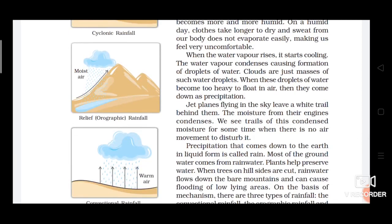Jet planes flying in the sky leave a white trail behind them — the moisture from their engines condenses. You must have noticed that when jet planes fly in the air, they leave white lines behind them. Those white color lines appear because of the moisture inside the engines that condenses. We see trails of this condensed moisture for some time when there is no air movement to disturb it, after which it mixes into the air.